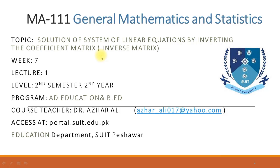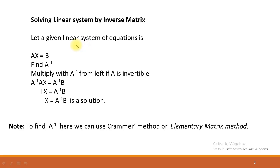Bismillah ar-Rahman ar-Rahim. Dear students, Assalamu alaikum. Today we are going to discuss the solution of a system of linear equations by inverting the coefficient matrix. This is the first lecture of the seventh week for the course General Mathematics and Statistics. The system in matrix form is Ax = B, where A is the matrix of coefficients, x is the matrix of unknowns, and B is the matrix of constants. Today we are going to find the solution of a system of linear equations by using the inverse matrix.